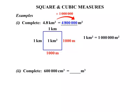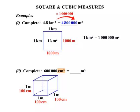Our second example here, we need to complete: 600,000 cubic centimetres equals how many cubic metres? We're dealing with cubic metres, so let's start off with a little diagram. 1 metre by 1 metre by 1 metre. And we're changing it to cubic centimetres, so let's replace that with 100 centimetres by 100 centimetres by 100 centimetres.